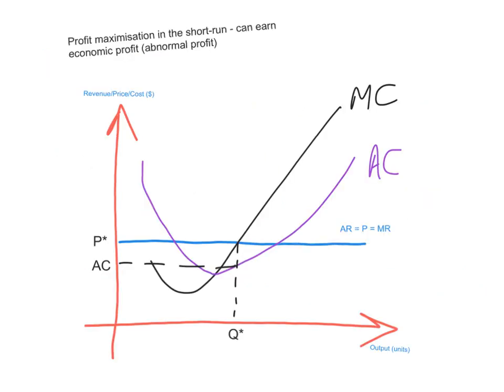Let's have a look at how a perfectly competitive firm maximizes its profits in the short run. There are three scenarios: a perfectly competitive firm can either earn an economic profit (abnormal profit) in the short run, it can make a loss (a negative economic profit), or it can earn a normal profit.